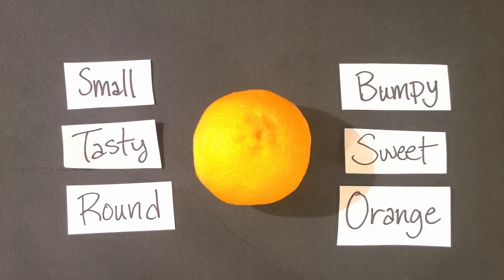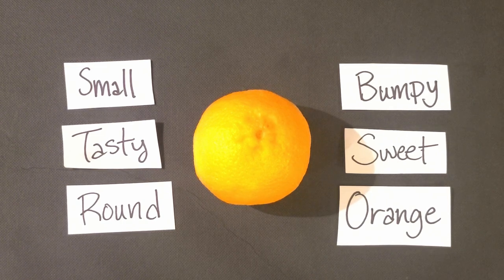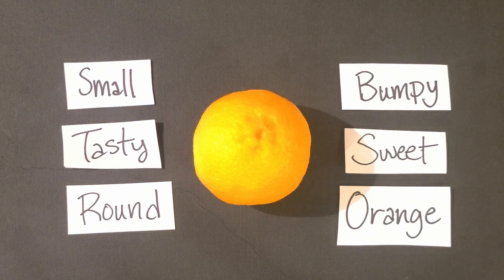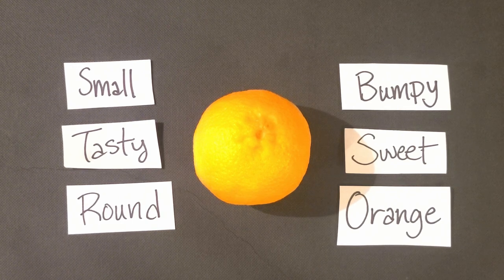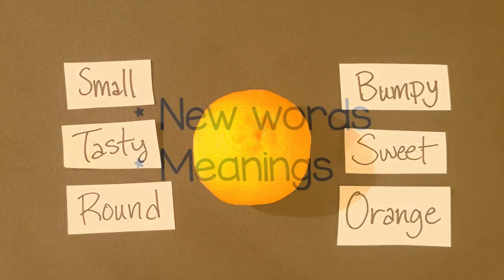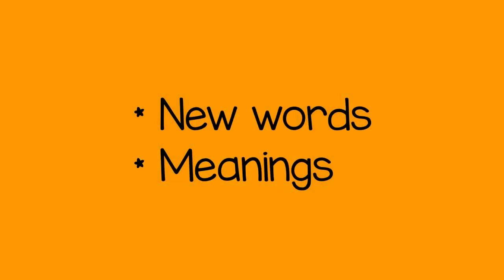You can continue going back and forth using different describing words. Then next time, you can choose a different object to describe. Doing this activity helps a child learn new words and their meanings.